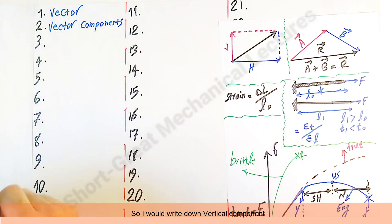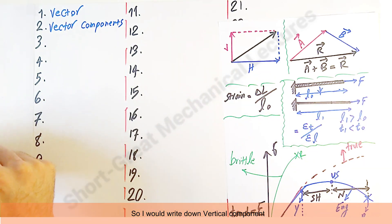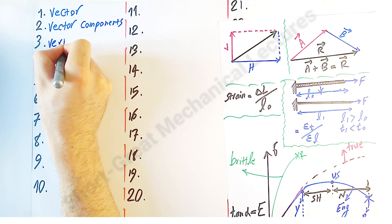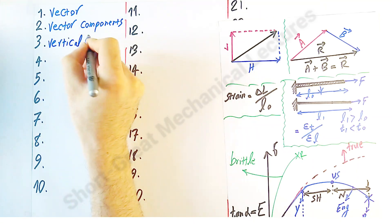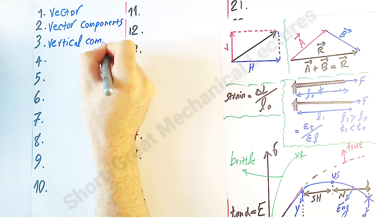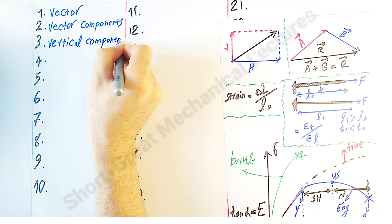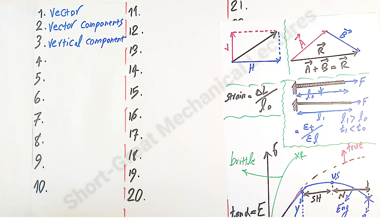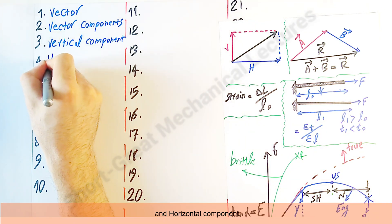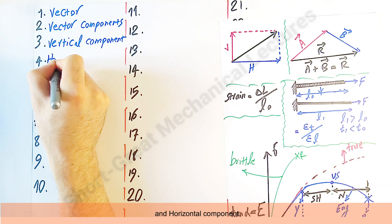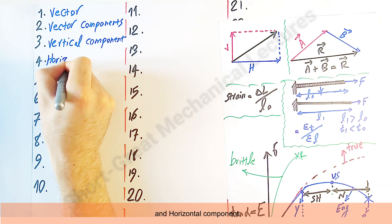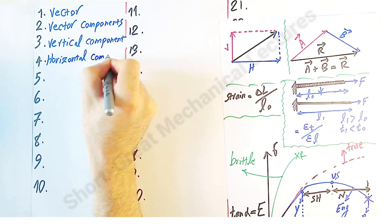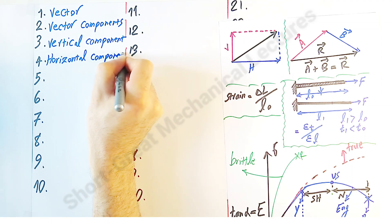So I would write down 'vertical component' and 'horizontal component.'